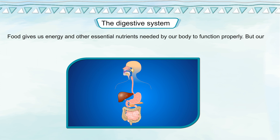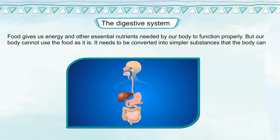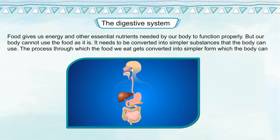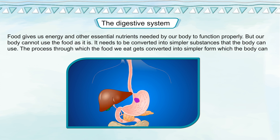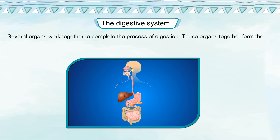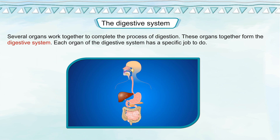The digestive system: food gives us energy and other essential nutrients needed by our body to function properly. But our body cannot use the food as it is — it needs to be converted into simpler substances. The process through which the food we eat gets converted into a simpler form which the body can absorb is called digestion. Several organs work together to complete this process, and together they form the digestive system, with each organ having a specific job to do.